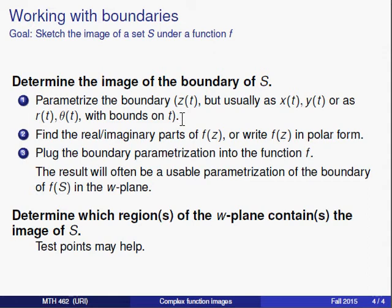We're going to take the boundary of our set S in the z-plane. We're going to write the boundary parametrically, as if we were tracing over the boundary through time. Now, usually, instead of keeping it as z of t, we'll break it up into a parametric description of the real part and of the imaginary part. Or if it's more convenient, we can write the modulus and the argument in terms of our parametric variable t.